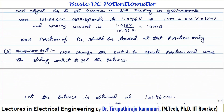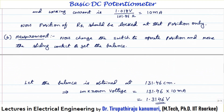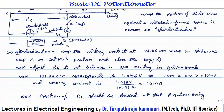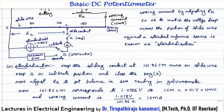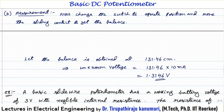Once standardization is done, we proceed to measurement. Change the position of switch S to the operate position. The galvanometer will show a non-zero value — either positive or negative — depending on the unknown voltage. Adjust the slide wire contact in such a way that it shows zero reading. Let us assume balance is obtained at 131.46 centimeters.